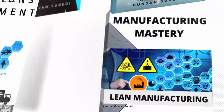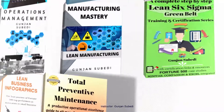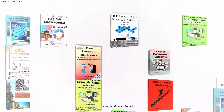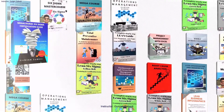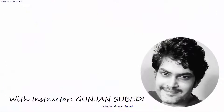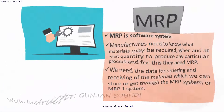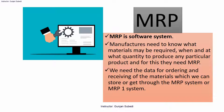MRP is basically a software system. Manufacturers need to know what materials may be required, when, and at what quantity to produce any particular product — and for this they need the MRP. We need the data for ordering and receiving of materials, which we can get or store through the MRP or MRP1 system.